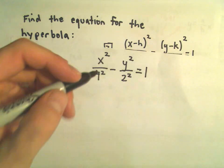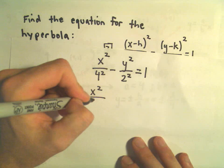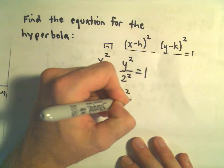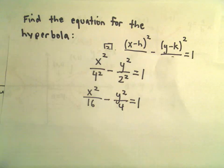And you could always multiply this out. It says our equation would be x squared over 16 minus y squared over 4 equals 1.